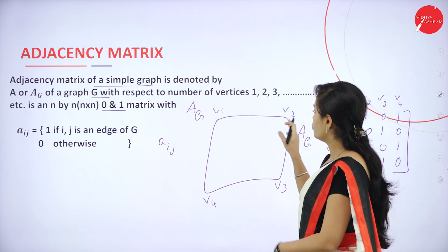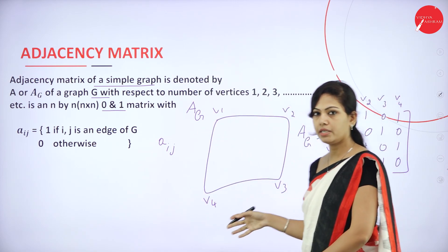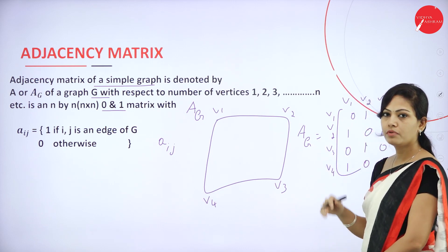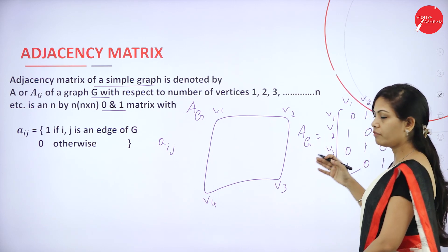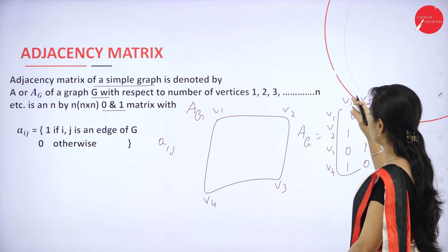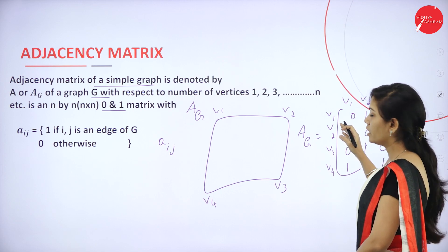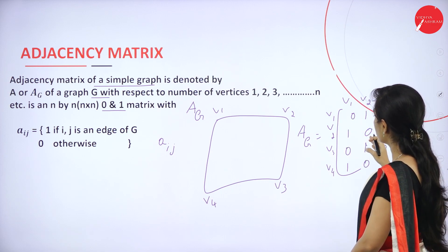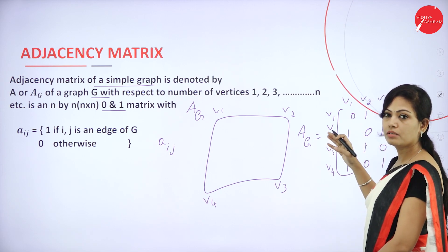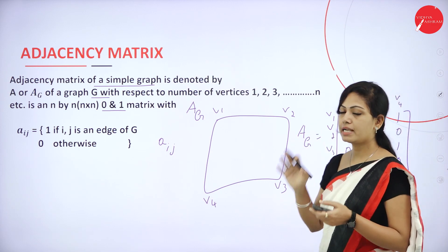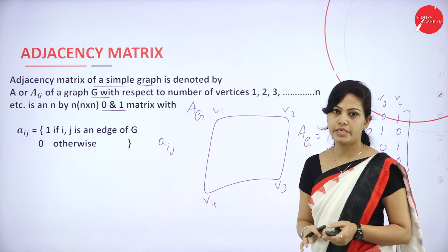If you get a self-loop, you can write the value of V1 to V1 as 1 (if it is a self-loop, V1 to V1 is also 1, V2 to V2 is also 1, and so on). You have to write the adjacency matrix accordingly.